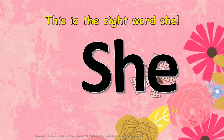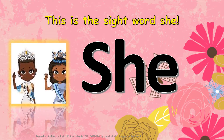S-H-E, she. The sight word 'she' is used when we're talking about a female. A female is a girl, a woman, or even a mummy animal. She.